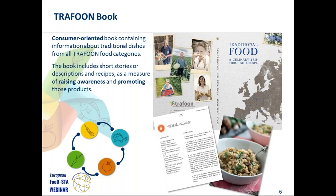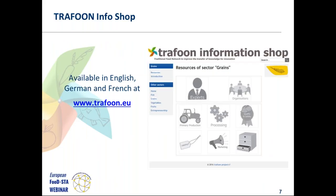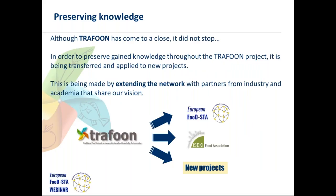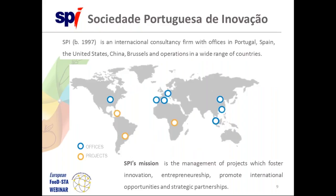Some of the results of the TRAFUN project include: an inventory of needs of SMEs in the traditional food sector, 55 training workshops across 13 European countries, a strategic research and innovation agenda, and a consumer-oriented book containing information about traditional recipes and products from countries including Portugal, Bulgaria, Germany, and Sweden. All information is available on the TRAFUN website's information shop in English, German, and French.